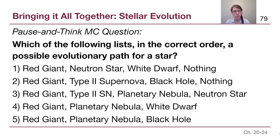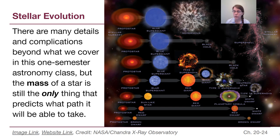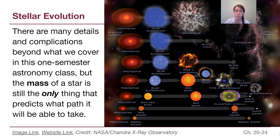What's really important to understand is that the real world is far more complicated than the three stellar evolution paths highlighted in this summary. There are many more details and complications beyond what we cover — some are in the textbook, others are even more complex than what an introductory textbook includes. But no matter what, the mass of a star is what determines which of these paths it's able to take. The mass of a star tells us everything about what can and cannot happen to it.